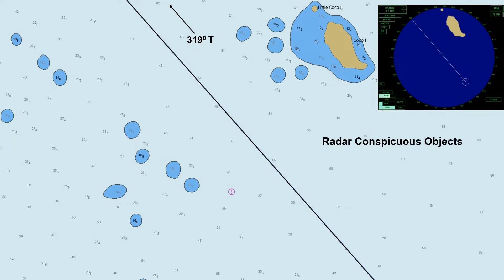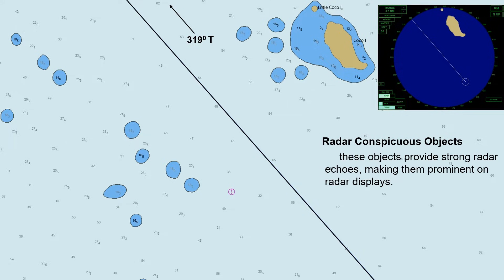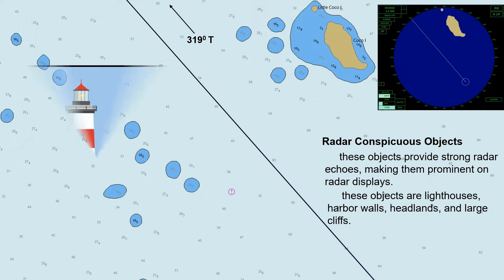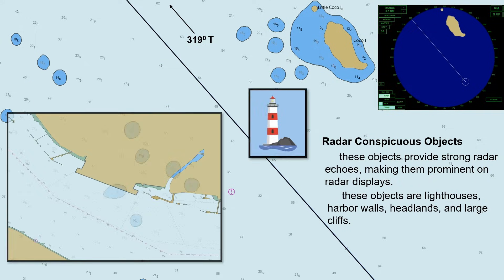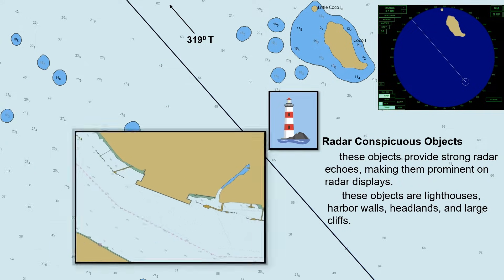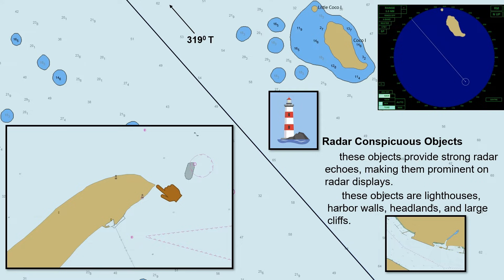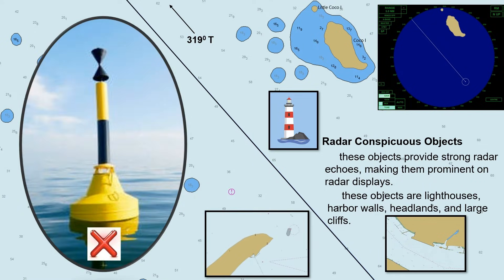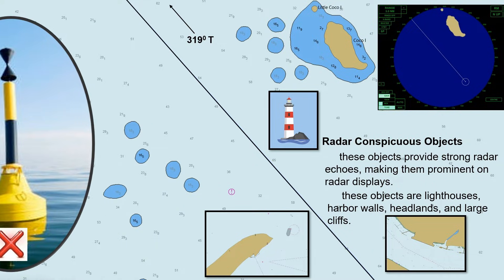When we say radar conspicuous objects, these objects provide strong radar echoes, making them prominent on radar displays. Examples of these objects are lighthouses, harbor walls, headlands, and large cliffs. Buoys and other floating objects cannot be used as reference points as they might drift away at any time.